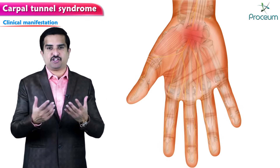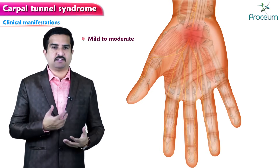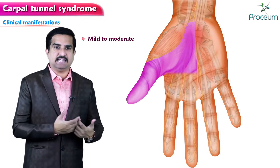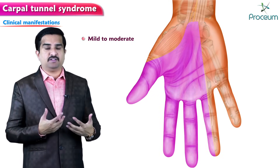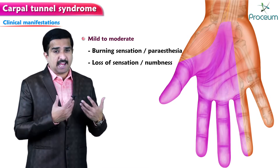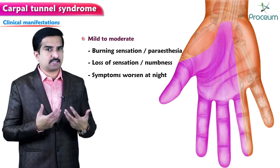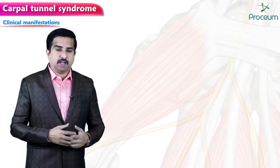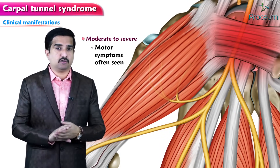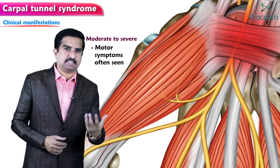In mild to moderate injury, sensory manifestations occur over the palmar surface of the thumb, index and middle finger, and radial half of the ring finger. In these areas there will be burning sensation, paresthesia, loss of sensation, or numbness — and these symptoms characteristically worsen at night. Motor symptoms are not commonly seen with milder forms of injury.